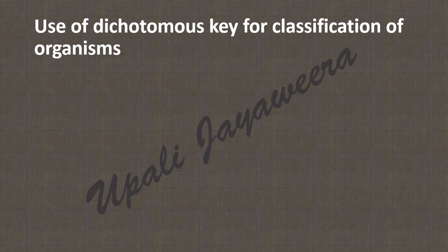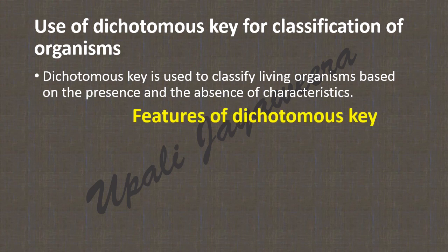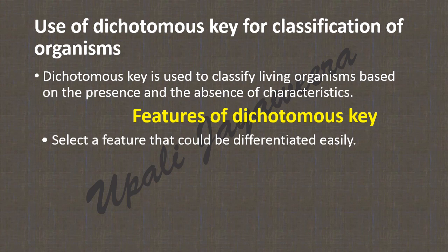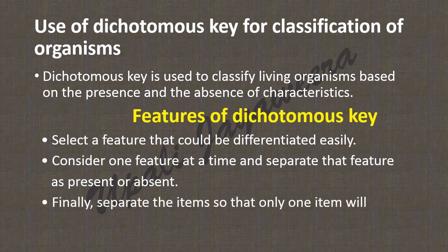We can use dichotomous keys for the classification of organisms. Dichotomous keys are used to classify living organisms based on the presence or absence of characteristics. To use them: select a feature that can be differentiated easily, consider one feature at a time and separate it as present or absent, and finally separate items so that only one item remains at the end.